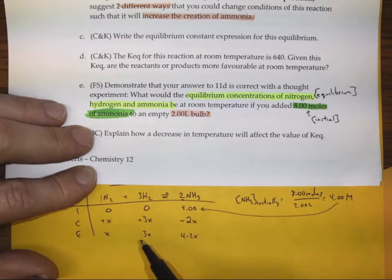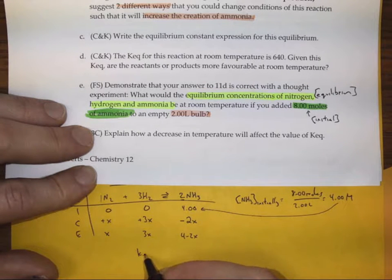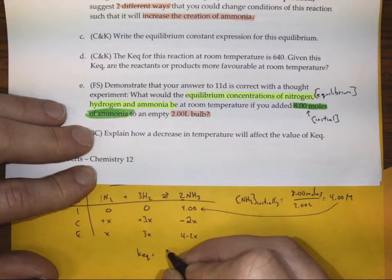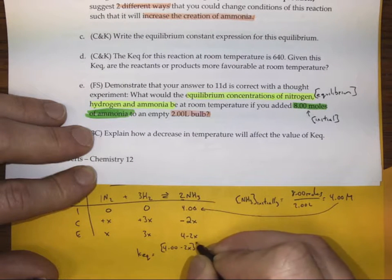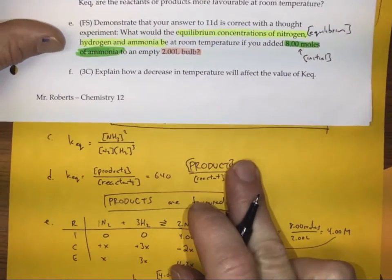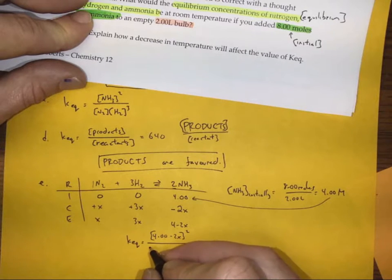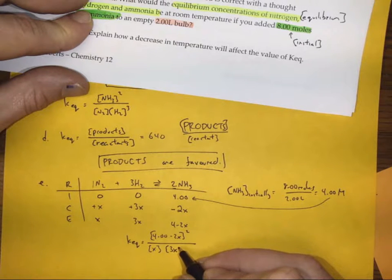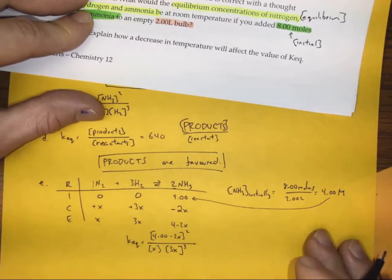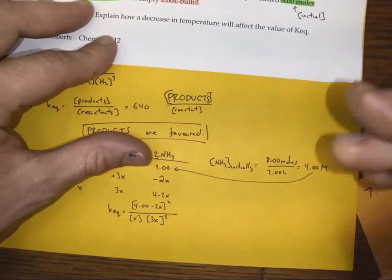So that tells me we're going to have X nitrogen, 3X hydrogen, and 4 minus 2X ammonia — all concentrations in moles per liter. Then we go to the equilibrium expression. We're going to take our product: (4.00 − 2X)² over X times (3X)³. Multiplying it through gives us 27X³, so it's X times 27X³ = 27X⁴ in the denominator. We set that equal to 640.